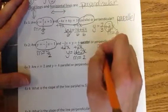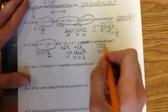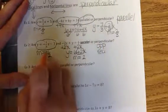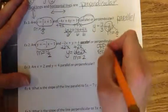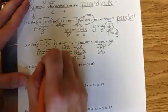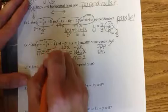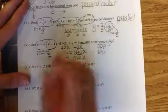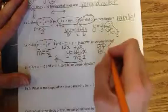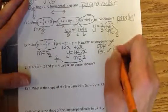For perpendicular, they have to be opposite reciprocals. To check for opposite: one has to be positive, one has to be negative — we have negative and positive, they're opposites, check. For reciprocals, they have to be flipped over — if we take 1 half and flip it over, we get 2 over 1. Is 2 over 1 the same thing as 2? Yes. So they are opposite reciprocals, so these two lines are perpendicular.